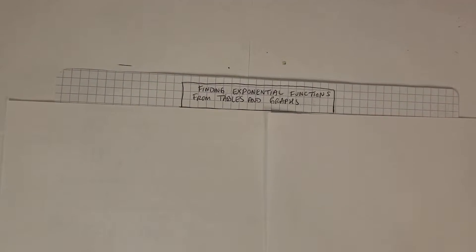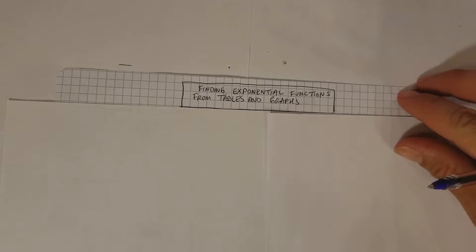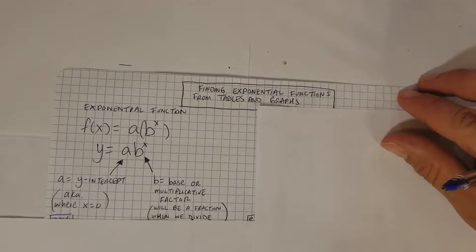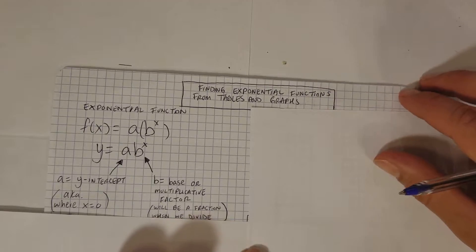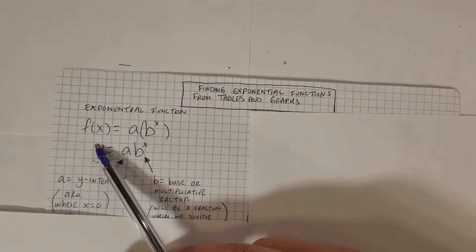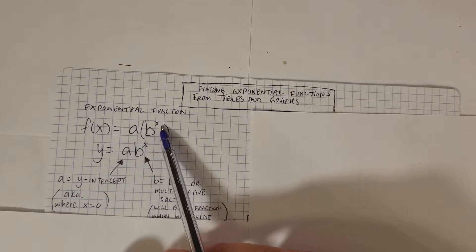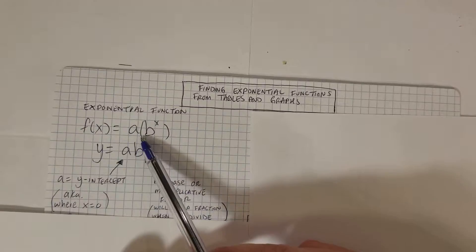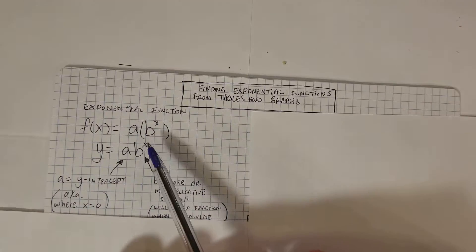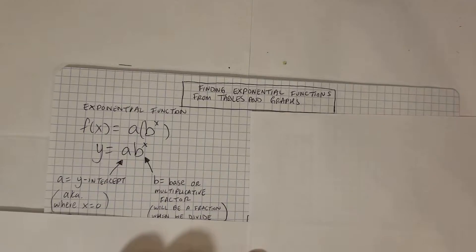In this video we're going to be talking about how do we find an exponential function — how do we come up with an exponential function from tables and graphs. So first of all, what does an exponential function look like? It looks like this, and they're revealed in many forms, but it basically comes down to the function in terms of x is equal to a times b to the power of x. So what that means is that you have a number in front multiplied by a number that is to the power of a variable.